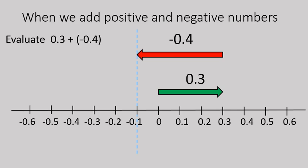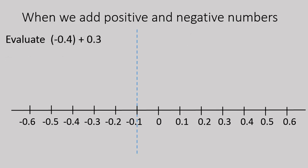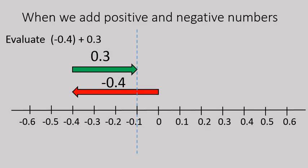Now these two numbers, 0.3 and negative 0.4, are being added. So you should be able to add in any order. So let's go ahead and reverse that. We knew our solution was negative 0.1. What if we started with negative 0.4, and then we added 0.3 onto it. Notice we get the same solution.